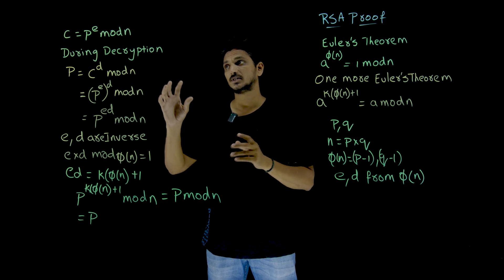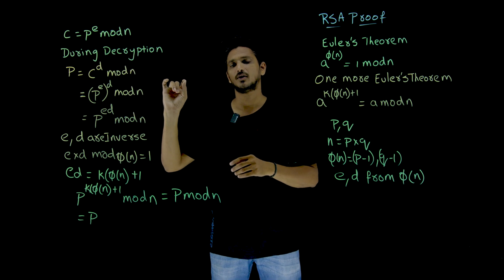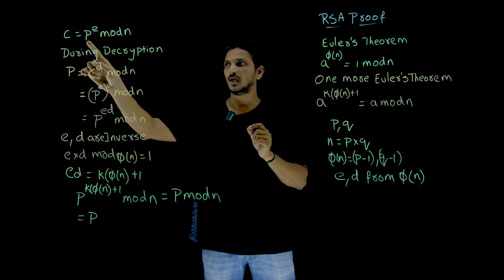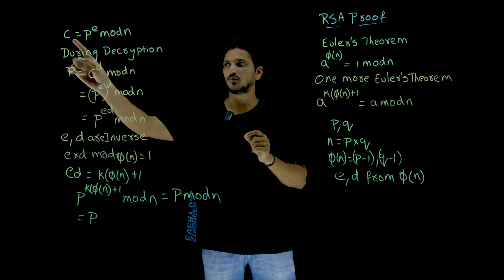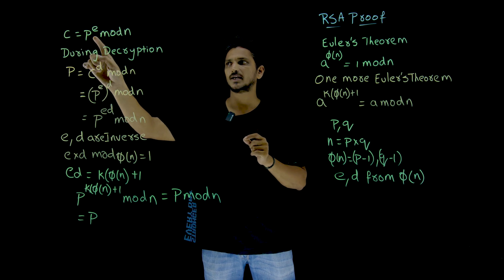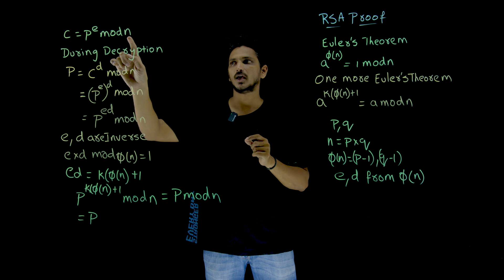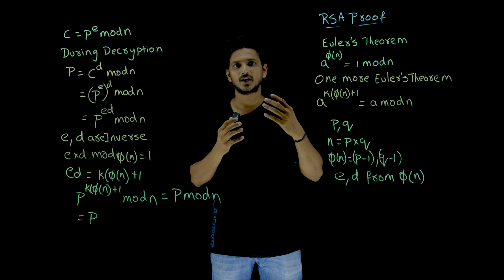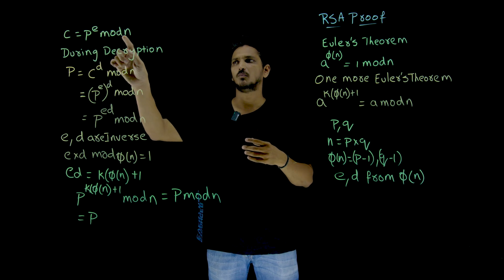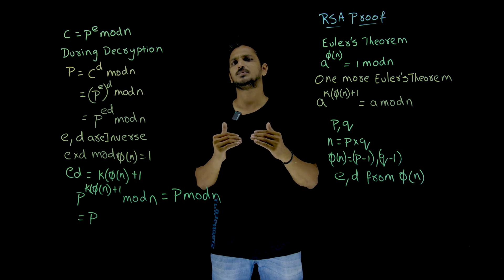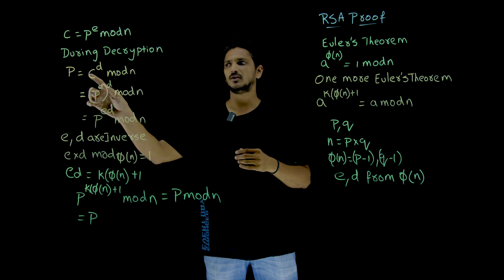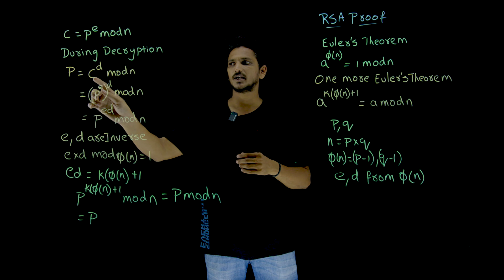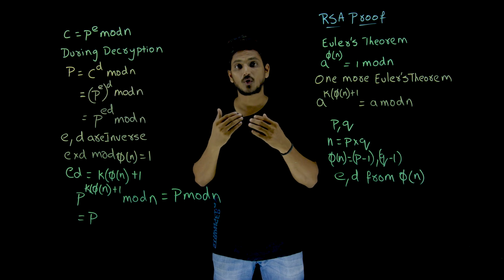Now let's understand what happens in the encryption stage of RSA. If you want to encrypt, p is the plaintext. To convert plaintext into ciphertext, you compute: plaintext to the power e, mod n. During decryption, to get the plaintext back from the ciphertext, you compute: ciphertext to the power d, mod n.